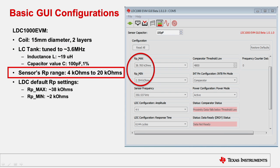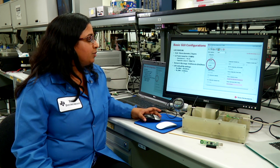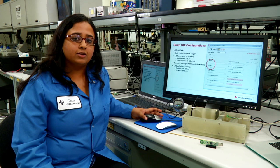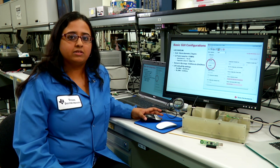The sensor's RP range is 4 kilo-ohms to 20 kilo-ohms. In order to make sure that when doing any sort of measurement that we capture the entire range, the default values that you will see on this GUI for RP-min and RP-max are around 2 kilo-ohms to about 38 kilo-ohms. When you change out the coil in your system, you need to make sure that you calculate RP-min and RP-max accordingly. The detailed calculations can be found in the LDC1000 data sheet.